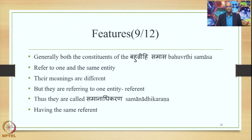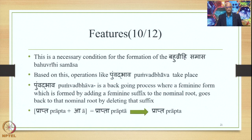Generally, both constituents of the Bahuvrihi Samasa refer to one and the same entity — an important semantic feature. Their meanings are different, but they refer to the same entity, and thus are called samanadhikarana. For example, in mushaka vahana, mushaka means mouse and vahana means vehicle, but they refer to the same entity — mushaka being the vahana. Samanadhikarana is a necessary condition for the formation of the Bahuvrihi Samasa, and operations like pumbad bhava take place based on this.